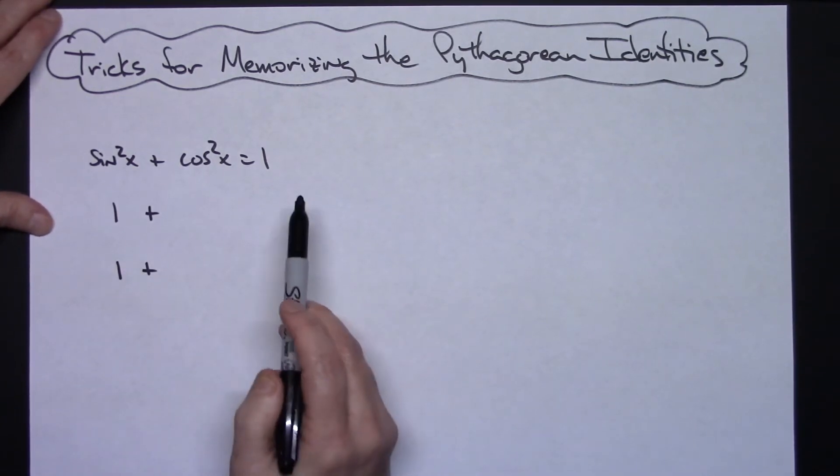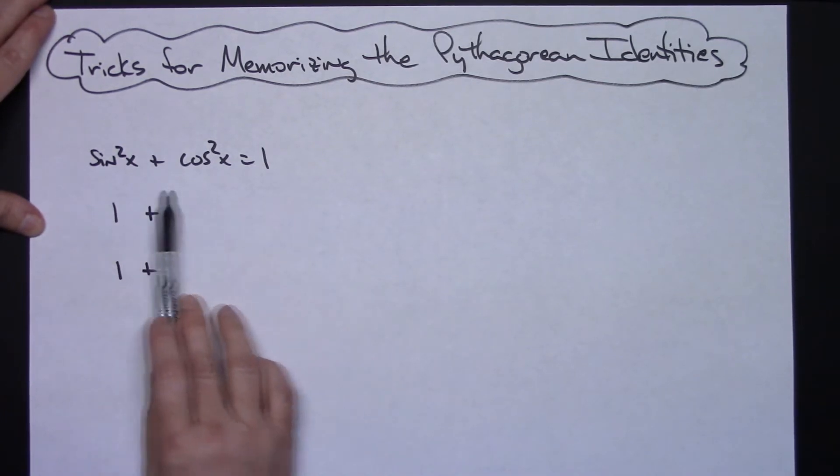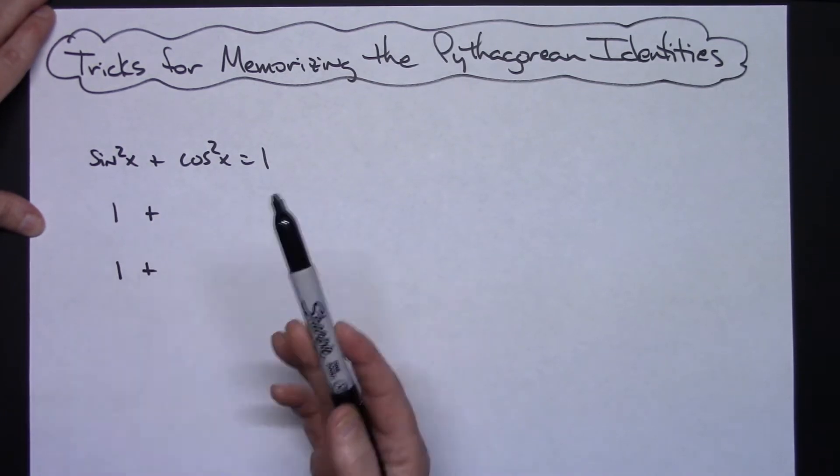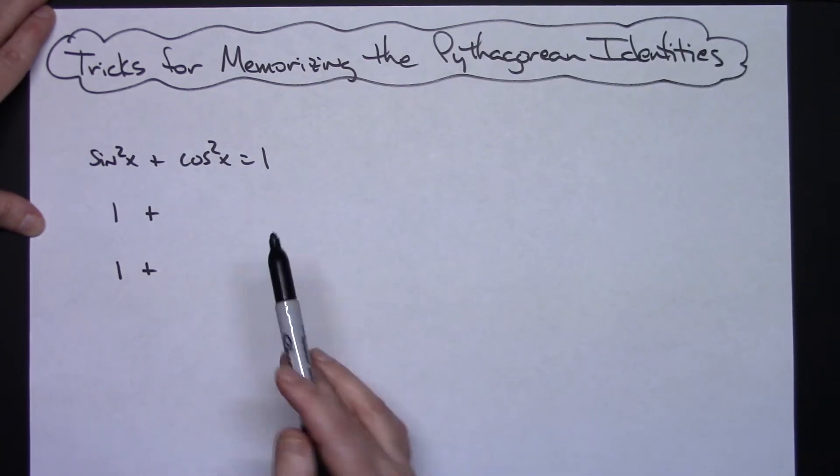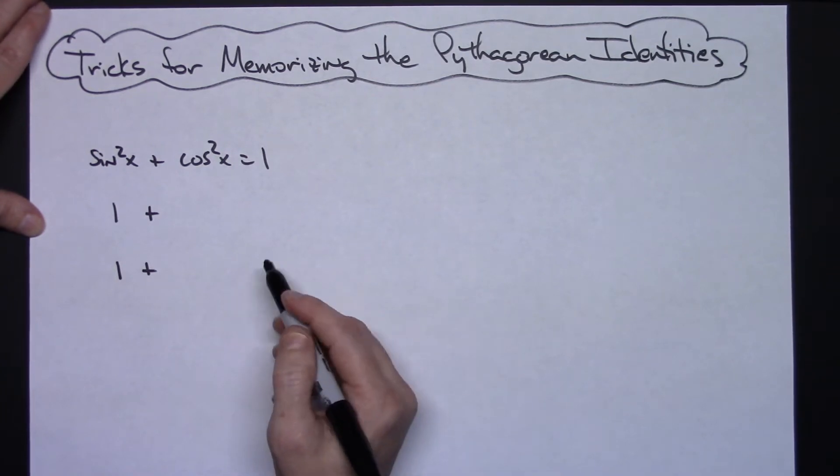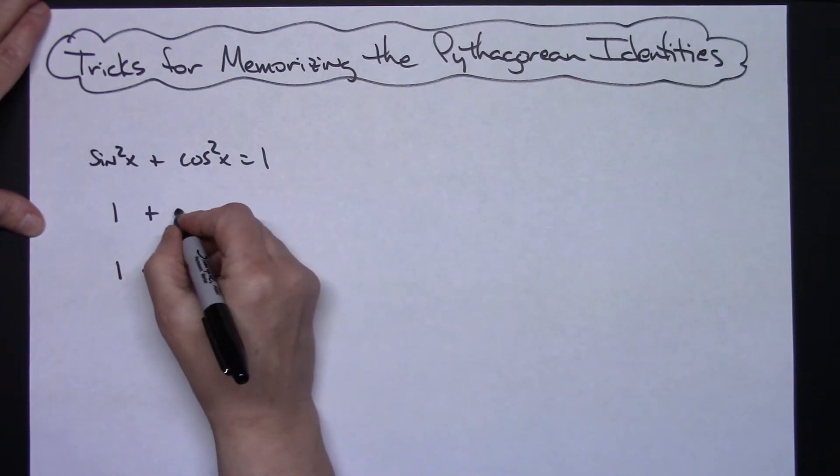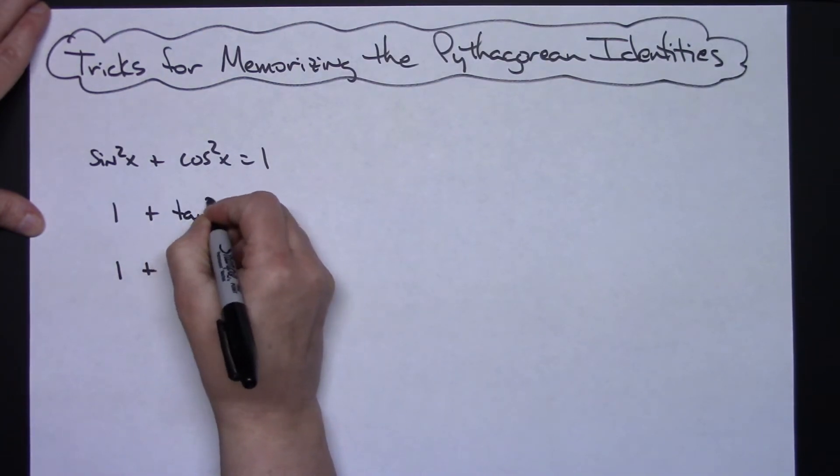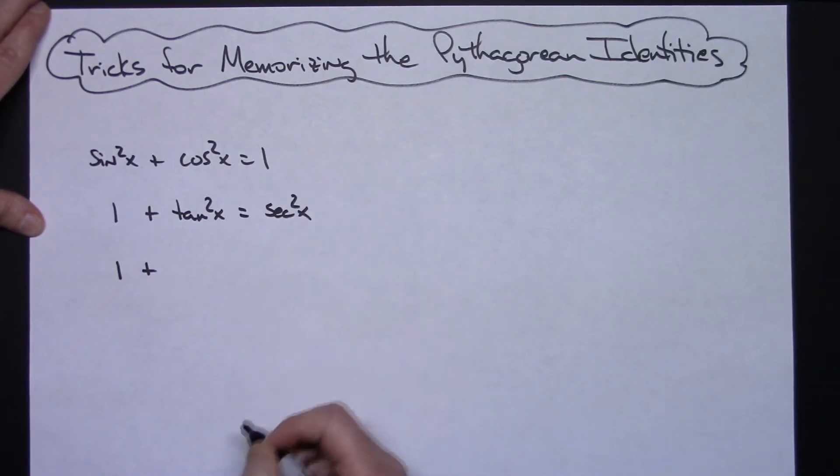And then because I do a lot of things with calculus, the second one is easy for me to remember because there's a natural connection between tangent and secant as far as doing derivatives and integrals and that sort of thing in calculus. So it's easy for me to connect tangent and secant. So then my tangent squared goes here and my secant squared goes here.